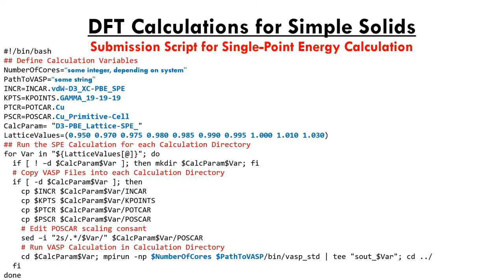I've defined additional variables: INCAR, KPOINTS, POTCAR, and POSCAR. The reason is that VASP only recognizes input files if they're correctly titled — the INCAR file must be titled 'INCAR' in all capitals with no additional text or punctuation, and the same is true for KPOINTS, POSCAR, and POTCAR. Later in the submission script, I use the CP (copy) BASH command to convert the names of the labeled script input files from a user-friendly format to a VASP-friendly one.